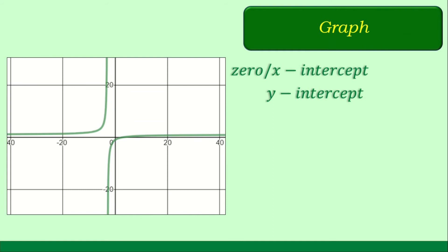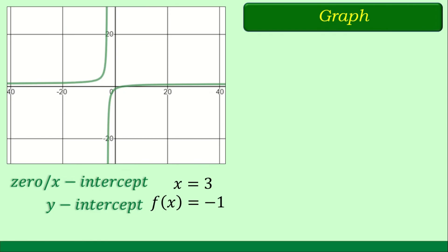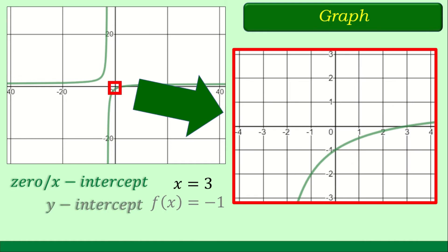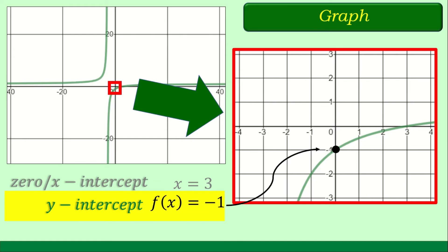Looking at the graph of the given rational function, we have the zero or x-intercept and the y-intercept with these values. Based on the graph, our x-intercept at x is equal to 3 is at this point, and our y-intercept — f(x) is equal to negative 1 — is right over here. So those are our values for the x and y-intercept of this rational function. I believe you are now ready to try another item.